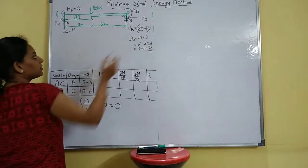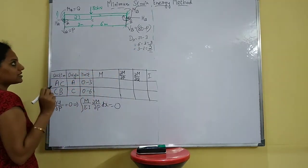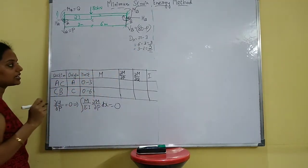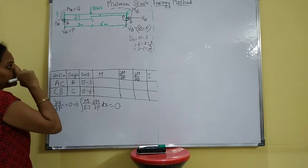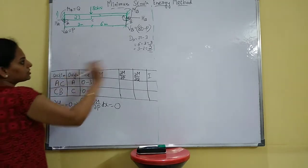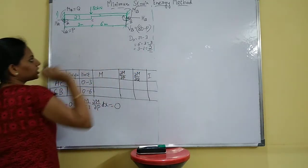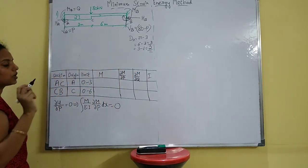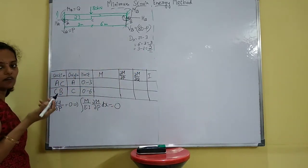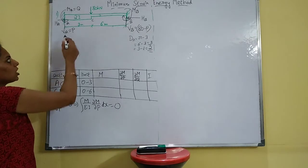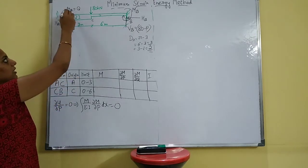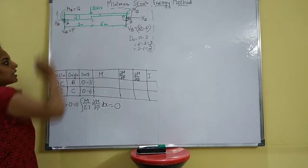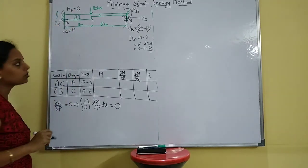You can simplify this by considering only the vertical loadings. Once this is done, you have two unknowns. So assume V_A equals P and M_A equals Q.